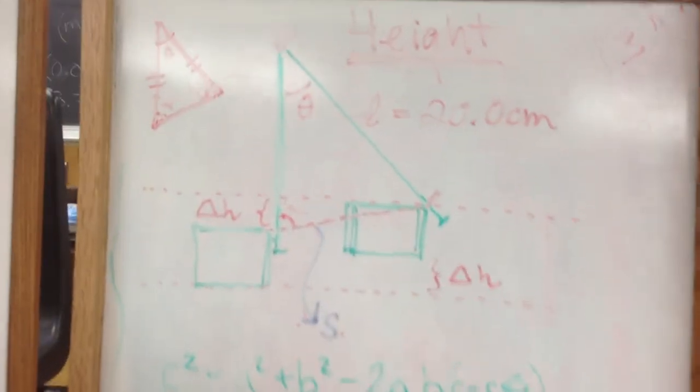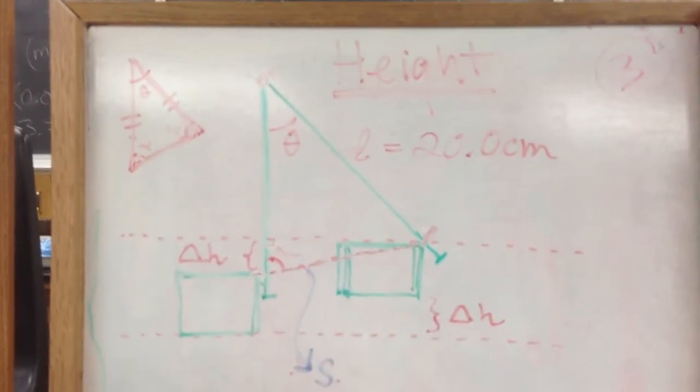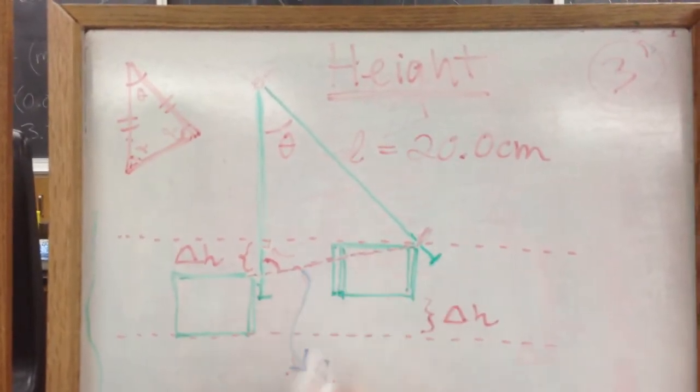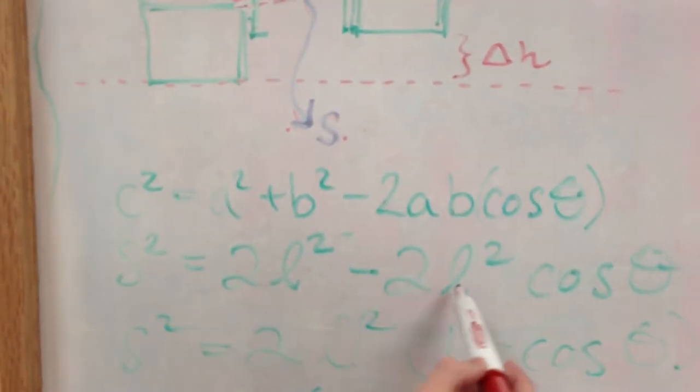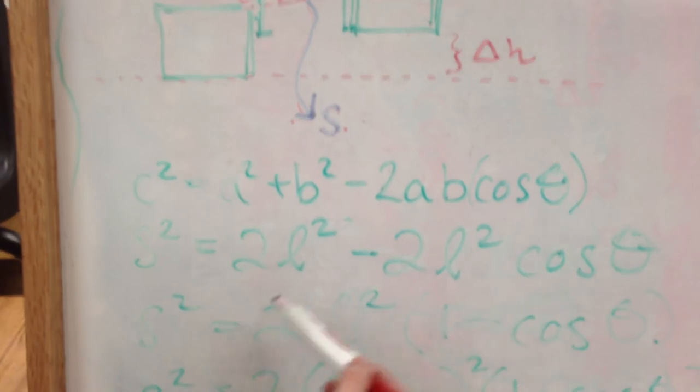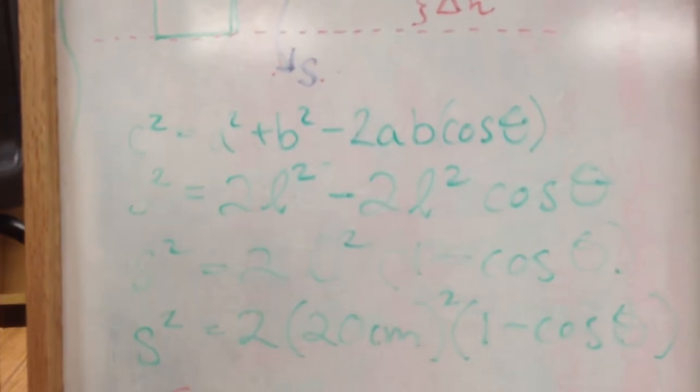So what we have to do is, using the law of cosines, we figured out that this side here is 2 times the length squared minus... or you can see the rest of the equation. Basically, at the end, we have a side that depends on 2 times the length squared minus... times that.